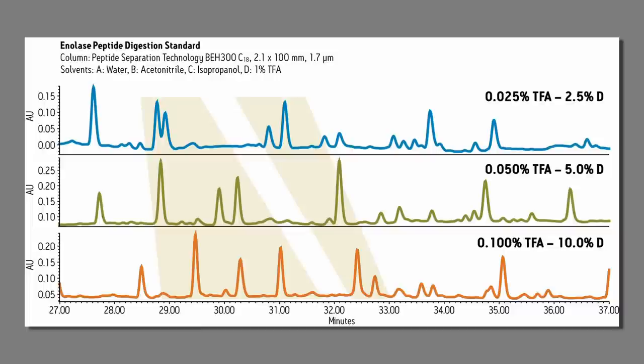This is important for methods development because a reverse phase separation is dependent upon the organic solvent, the identity of the modifier, the pH, and the ionic strength. Instead of having to make multiple bottles of solvent to do our separation development, we just form different compositions by programming different percentages from the software. We can change TFA concentration or we can get a different selectivity by replacing some or all of the acetonitrile with isopropanol.